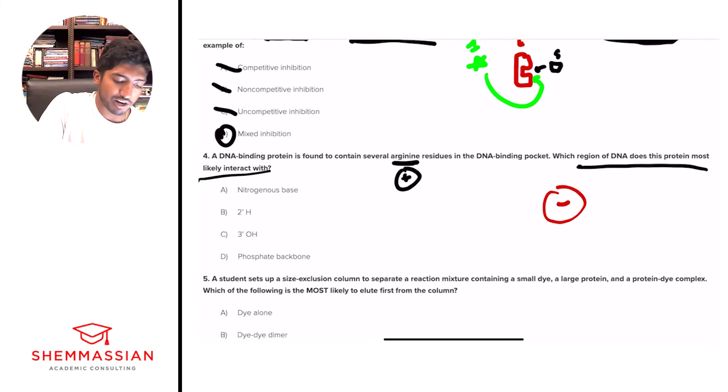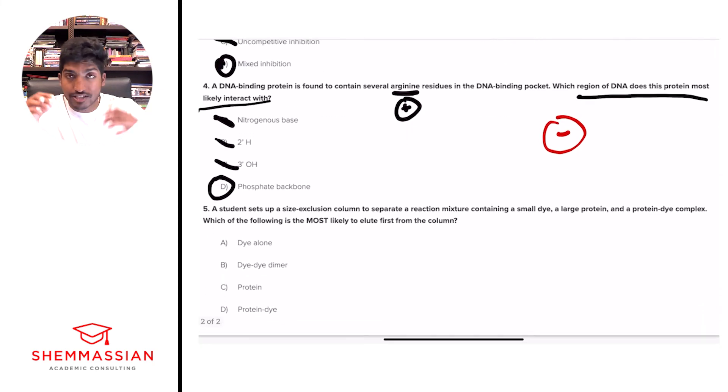And so we can cross out A right away because a nitrogenous base, positively charged generally. And so we can eliminate A because of that reason. B, 2'H, eliminate that, not charged. C, 3'OH, while polar, still not charged. So we can eliminate C. Phosphate backbone, that's our answer, right? Phosphate's negatively charged atom. Very, very important to understand that phosphate will be the PO3, PO4 minus that will interact with these positive charges generally. You'll see that in the backbone. You can also see that with amino acids that have positive or negative charges, that they'll interact with each other in that way. So for that reason, we understand that arginine is a positive charge. Phosphate is a negative charge. They come together.